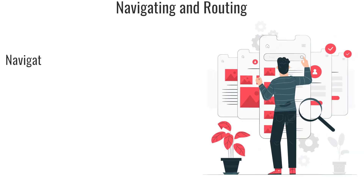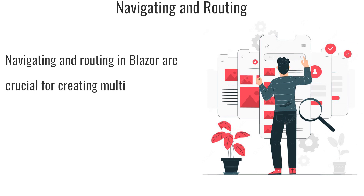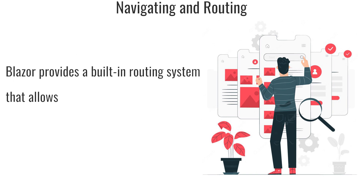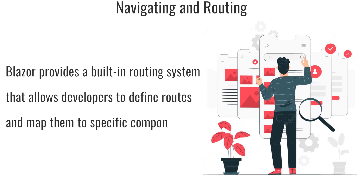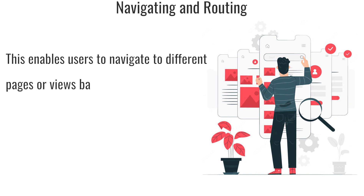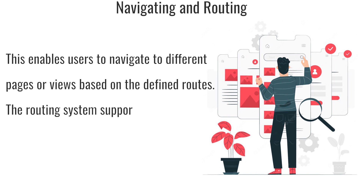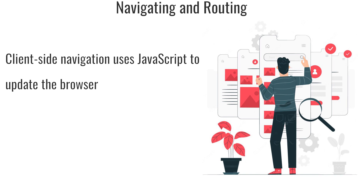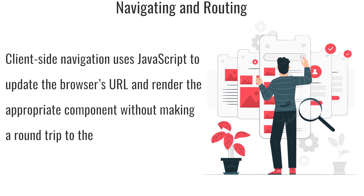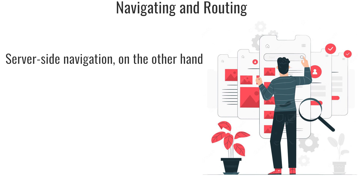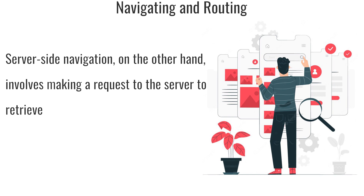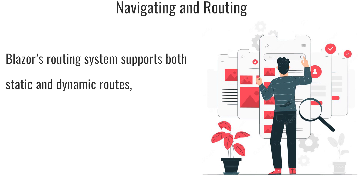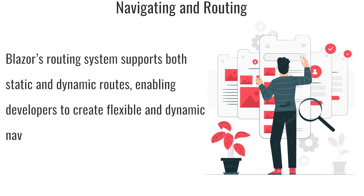Navigating and routing in Blazor: Navigation and routing are crucial for creating multi-page web applications with seamless navigation between different views. Blazor provides a built-in routing system that allows developers to define routes and map them to specific components, enabling users to navigate to different pages based on the defined routes. The routing system supports both client-side and server-side navigation. Client-side navigation uses JavaScript to update the browser's URL and render the appropriate component, while server-side navigation involves making a request to the server to retrieve the appropriate component. Blazor's routing system supports both static and dynamic routes, enabling flexible navigation experiences.